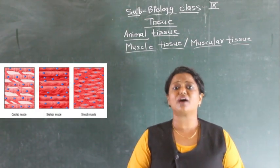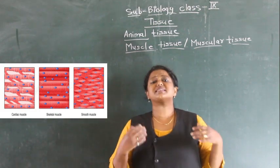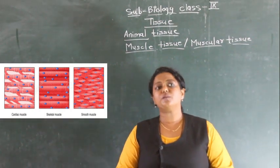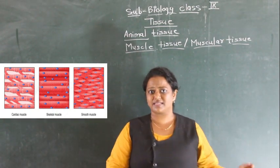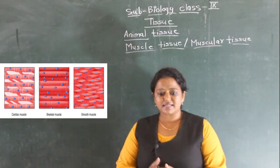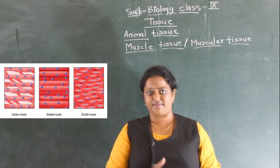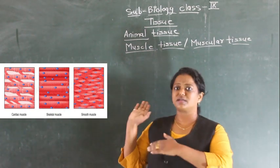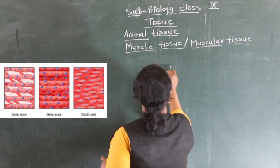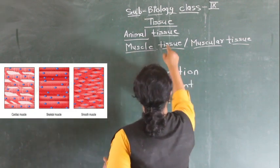Animals show movement and also undergo the process of locomotion. I can move my hand, my leg, go ahead, come back — animals can do various kinds of movement. Locomotion means moving from one place to another place. Plants cannot show locomotion. Both locomotion and movement are possible due to the presence of muscular tissue in the body.